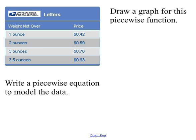We're going to start with a classic piecewise function example: the Postal Service and the way they charge you to mail a letter. At one ounce — anything up to and including one ounce, because it says 'weight not over' — they're going to charge you 42 cents.